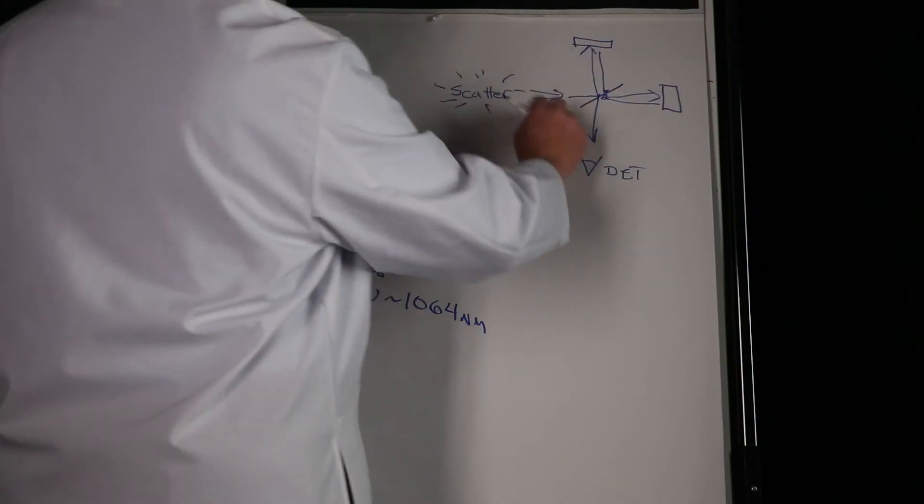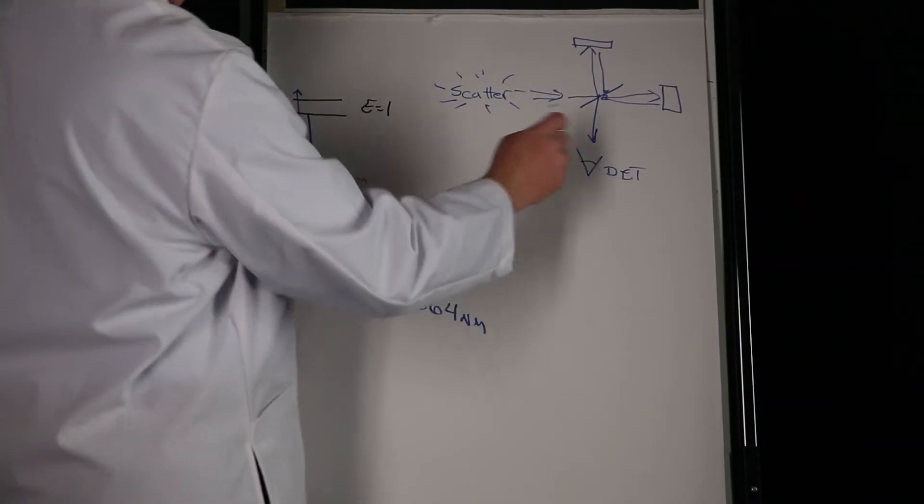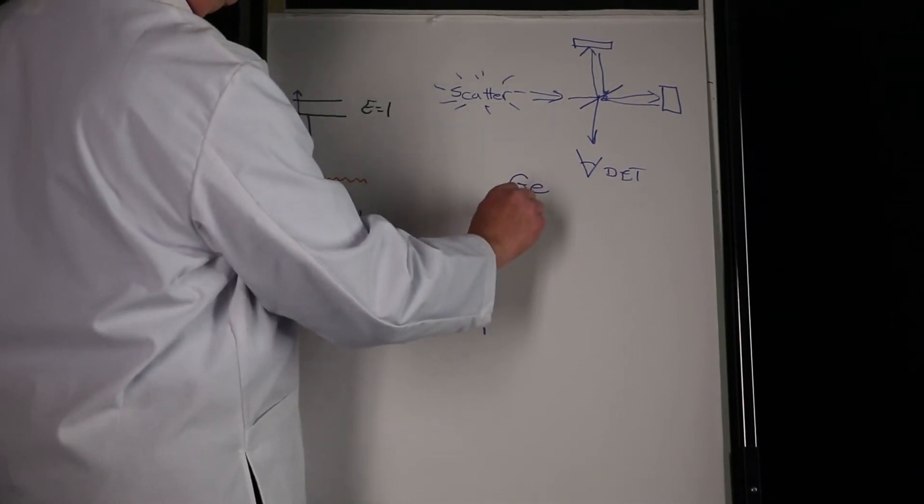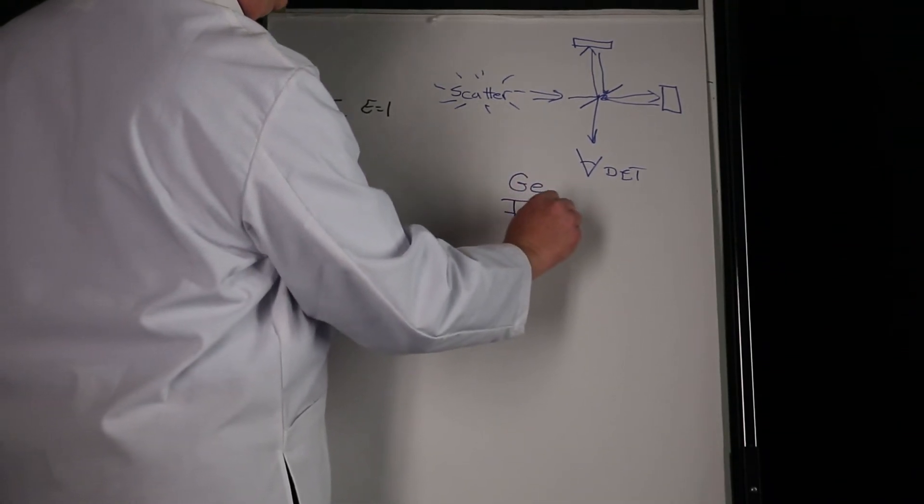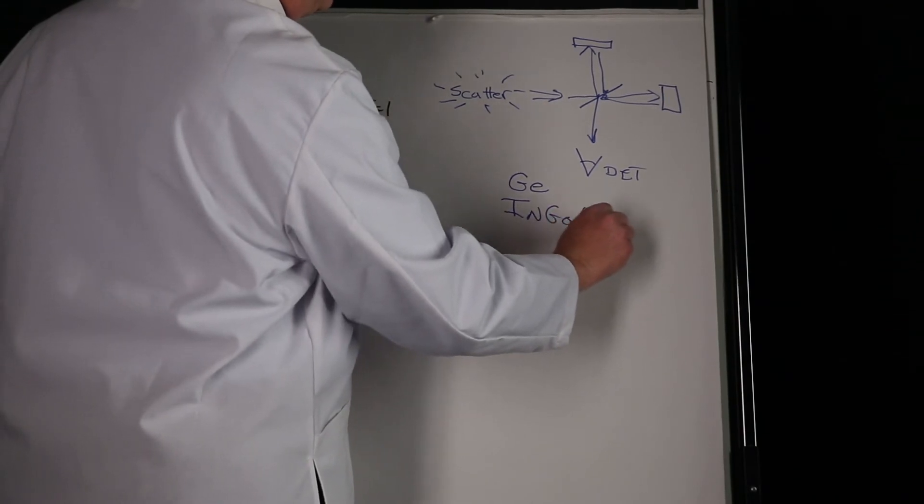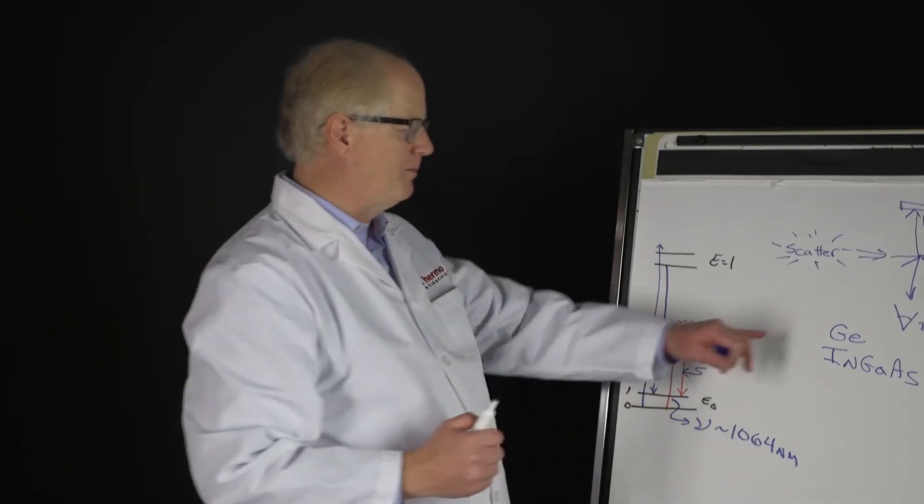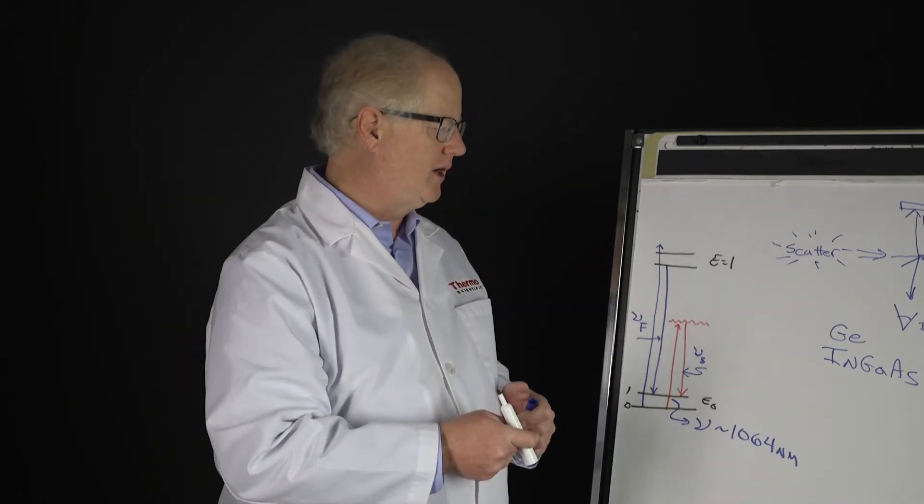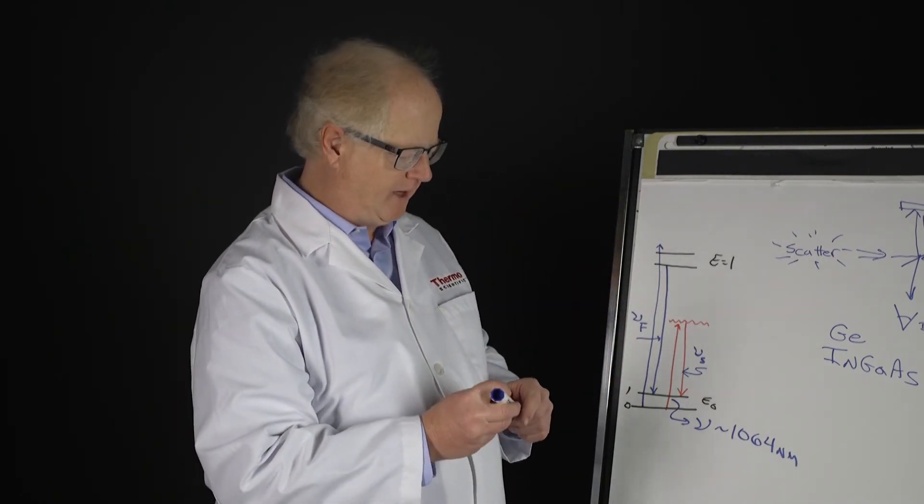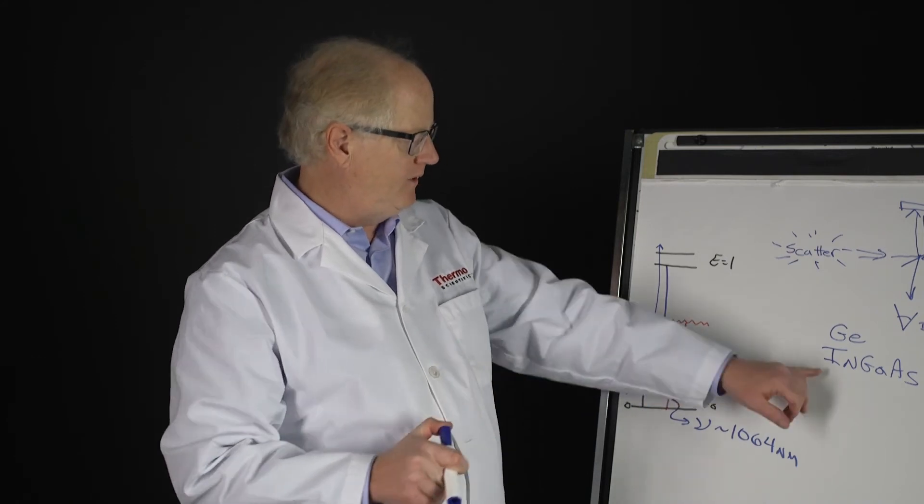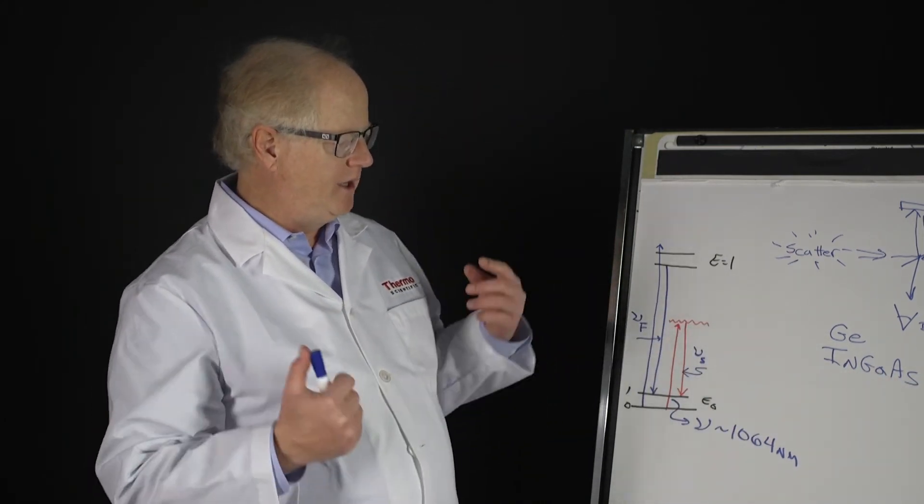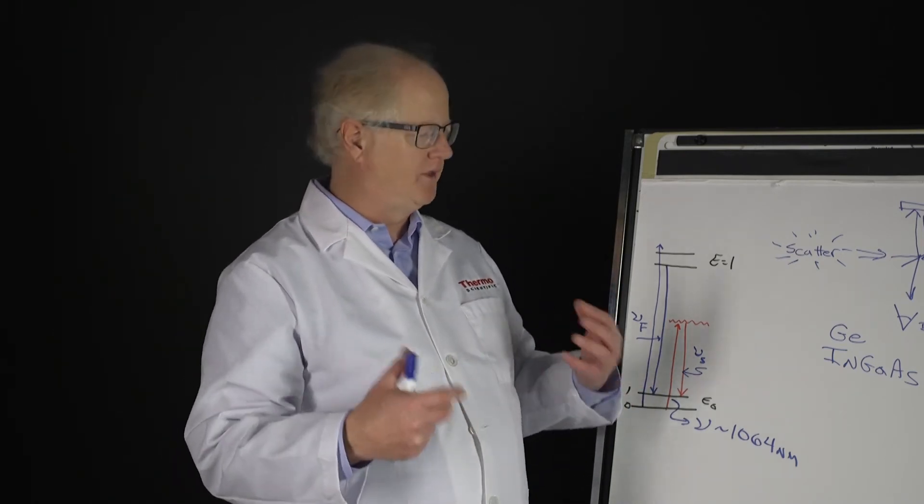The two detectors that have been used traditionally for the FT Raman systems are germanium detector - large germanium detector with liquid nitrogen cryogenics - and the room temperature indium gallium arsenide detector.